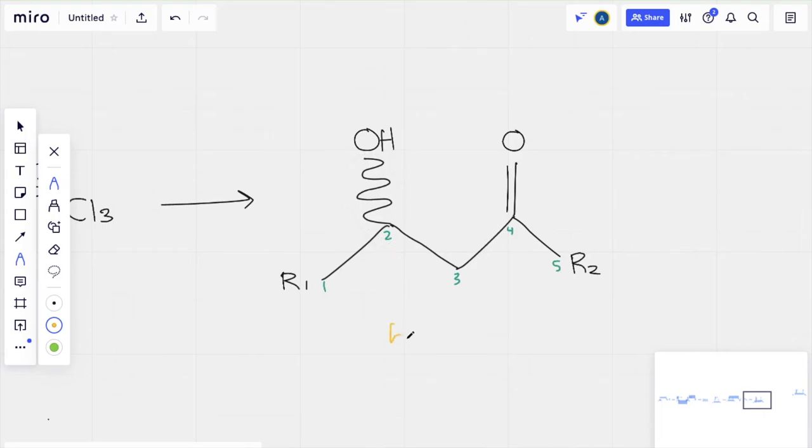Double bond to the oxygen, single bond to the OH group. And this is actually a racemic mixture. So you get a pair of enantiomers with this reaction.